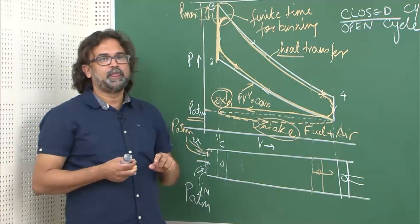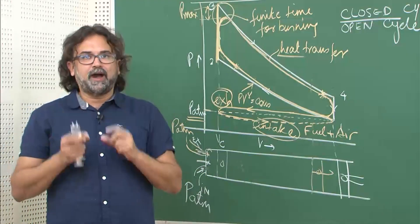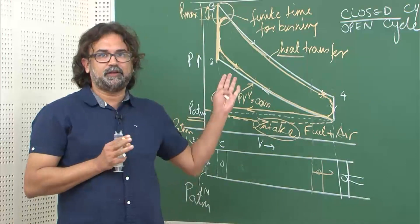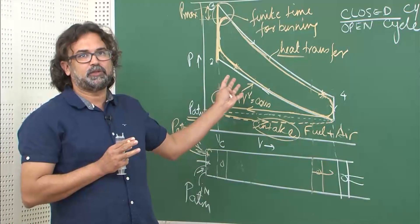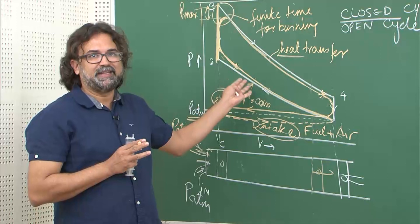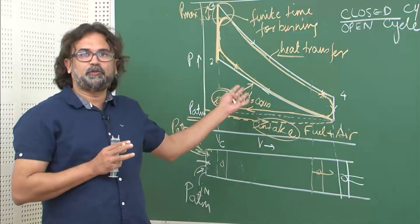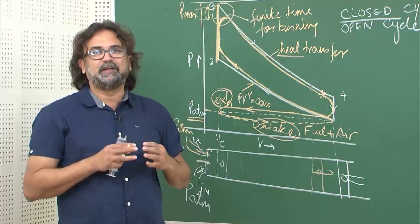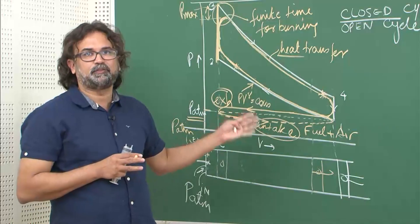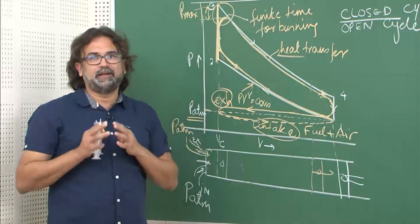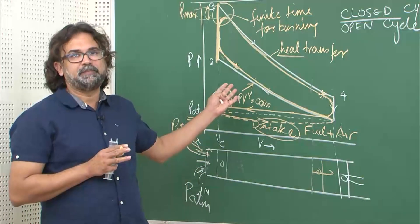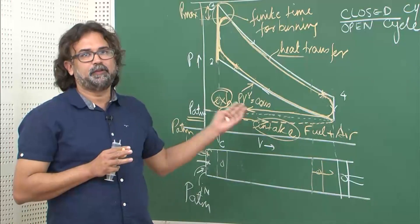To summarize today's lecture: you should understand the reasons why an actual petrol engine cycle differs from the ideal Otto cycle, and how that difference appears on a PV diagram. The same chain of reasoning applies equally to a diesel engine — an ideal diesel cycle will differ from the actual diesel cycle in very similar ways. Ignition timing will be discussed in a separate lecture.